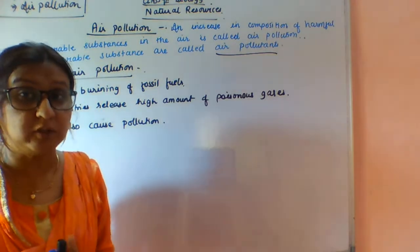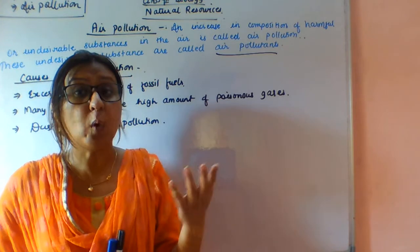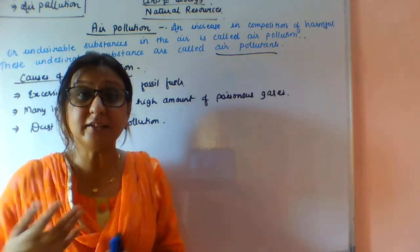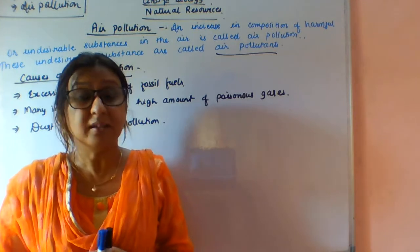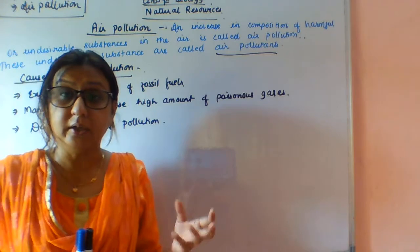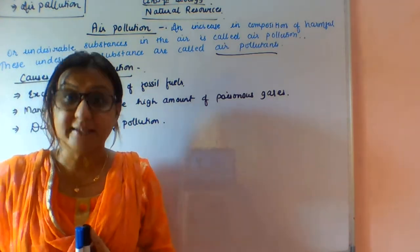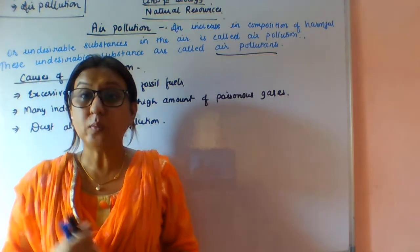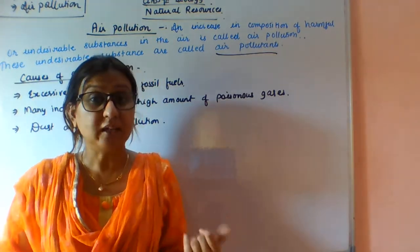The first cause of air pollution is excessive burning of fossil fuels. Burning of coal and petroleum leads to an increase in oxides of sulfur and nitrogen in the atmosphere. These oxides are very harmful, and when they get mixed up with moisture in the air, they form acid rain.